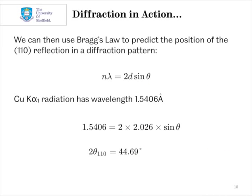We can then use Bragg's law to predict the position of that reflection in a diffraction pattern. So, if we take the x-rays as having the wavelength of Kα1 radiation, 1.5406 angstroms, we can substitute that in as λ.